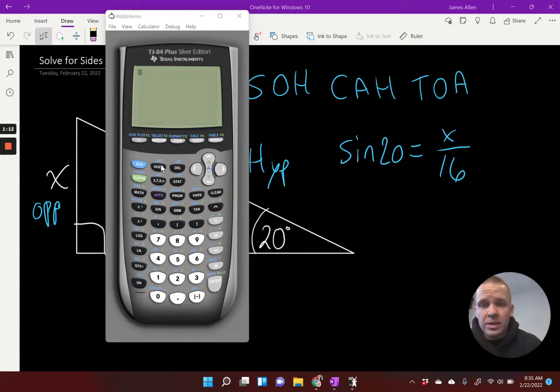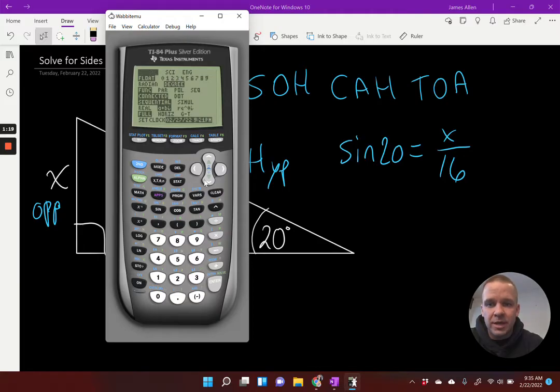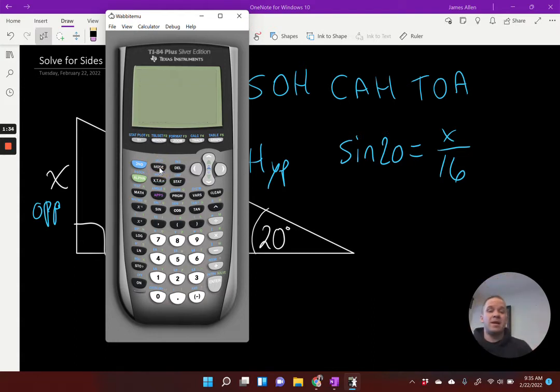First things first, though, we want to make sure we're in the right mode. So I want you to hit mode right here. And then if you look here, we got radian or degree. Make sure degree is selected. You would arrow down twice into the right once. You'd hit enter on degree if it wasn't already on there. And then to get out of this screen, you're going to hit second, and then the mode button, it says quit. Now you're back to this home screen.